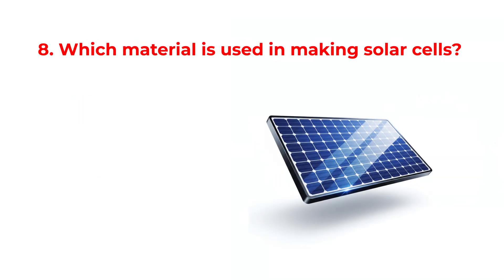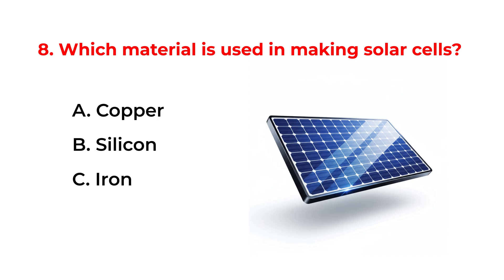Which material is used in making solar cells? A. Copper. B. Silicon. C. Iron. D. Aluminum.